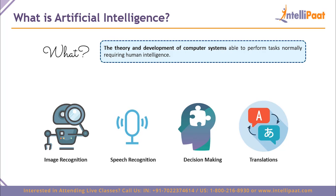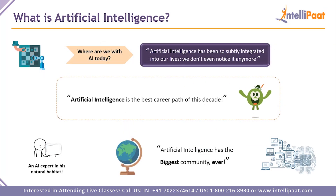There are many tasks where artificial intelligence is actually a lot better than human beings — for example, image recognition, speech recognition, decision making, and translations. We are trained to look at images, understand speech, perform logical decision making, and translate between languages. But nowadays all of this can be done faster, more efficiently, and eventually better than human beings by machines.